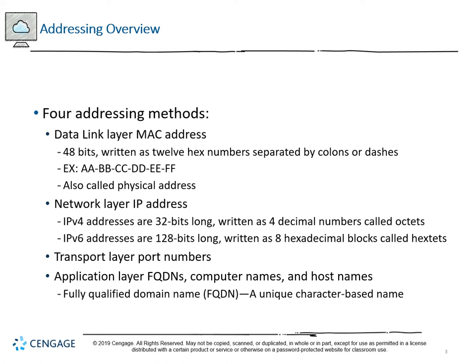There are four different methods we traditionally talk about when discussing addressing for telecommunications and computer networks. First, we have the data link layer MAC address. MAC stands for Media Access Control. It is 48 bits in length, written as 12 hexadecimal numbers separated by colons or dashes — for example, AA:BB:CC:DD:EE:FF.